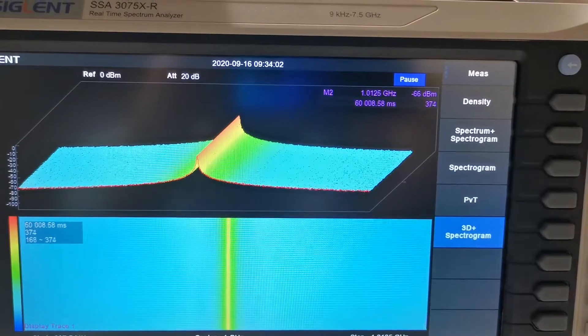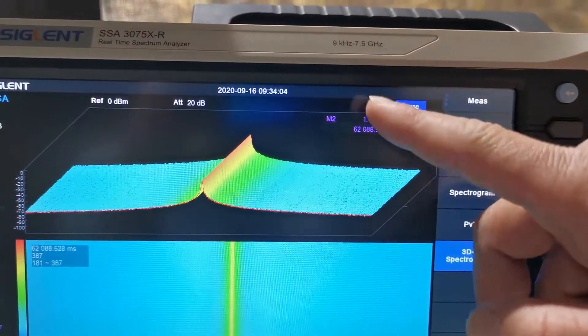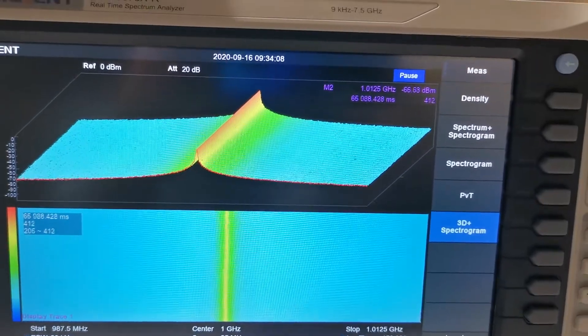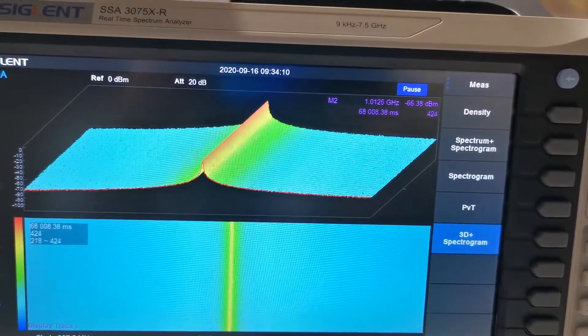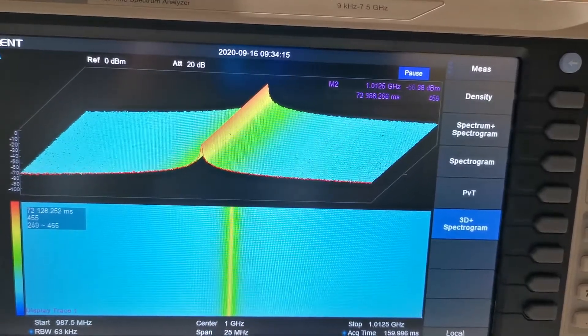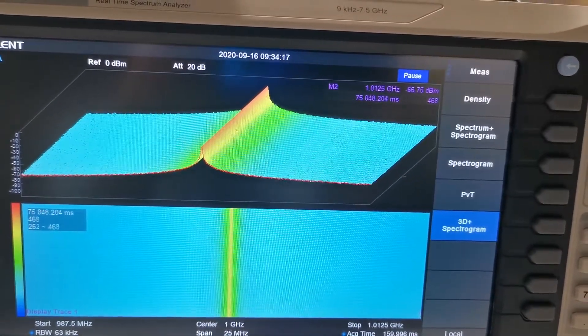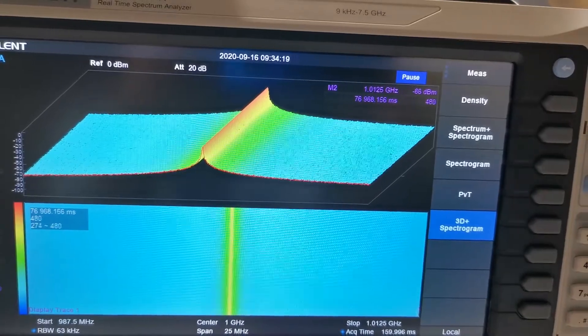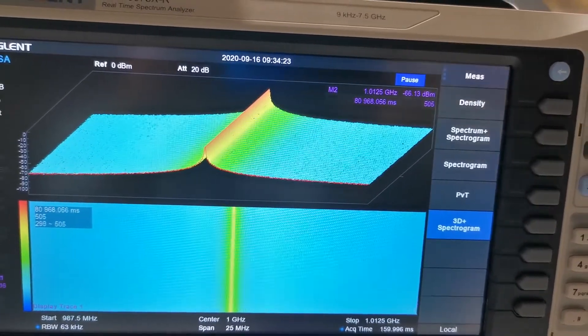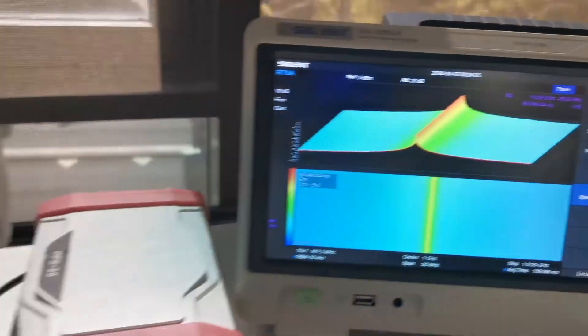To understand the waterfall diagram and the 3D spectrogram is very easy. For the 3D spectrogram, X is the frequency, Y is power, and Z is time. The waterfall diagram is similar. X is the frequency, Y is time, and the color is power. In this test, we can see the real-time spectrum analyzer can have a much better result very quickly without any gap. Now we can reduce the duty cycle further and see what happens.